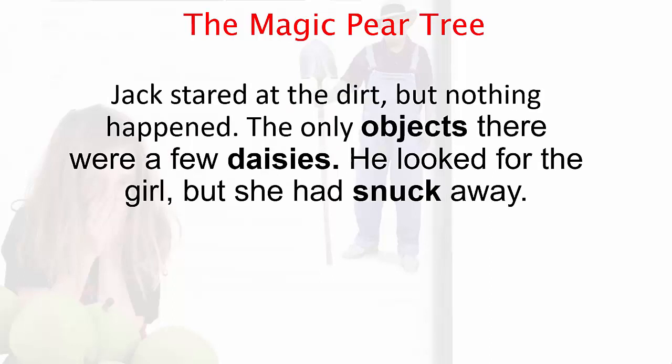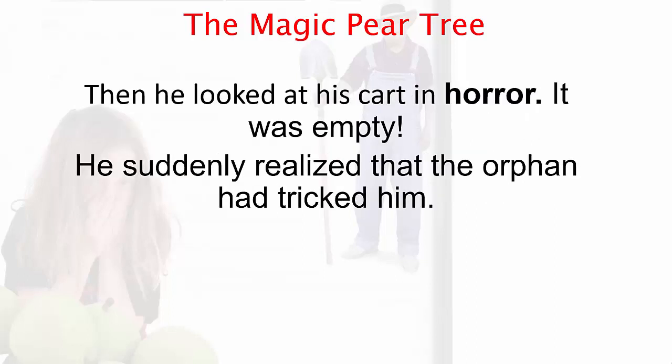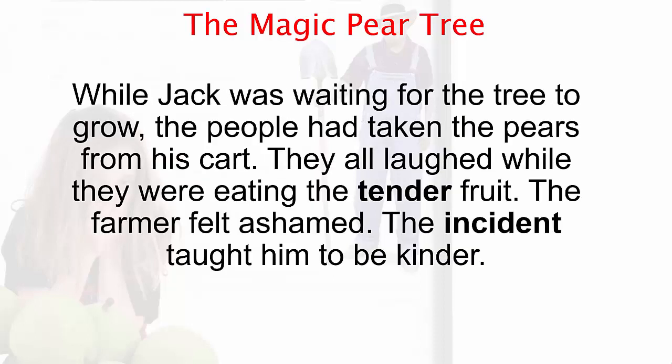Jack stared at the dirt, but nothing happened. The only objects there were a few daisies. He looked for the girl, but she had snuck away. Then he looked at his cart in horror — it was empty. He suddenly realized that the orphan had tricked him. While Jack was waiting for the tree to grow, the people had taken the pears from his cart. They all laughed while they were eating the tender fruit. The farmer felt ashamed.